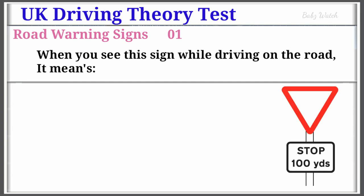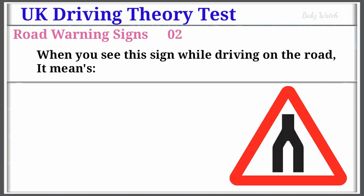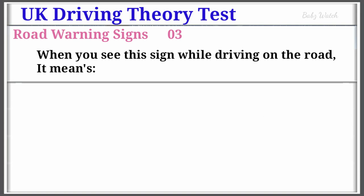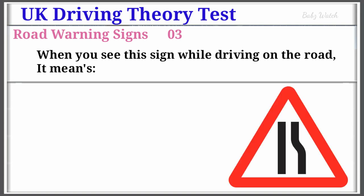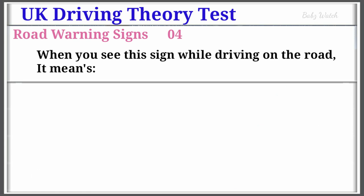UK Driving Theory Test Road Warning Sign Number 1: When you see this sign while driving on the road, it means Distance to Stop Line Ahead. Warning Sign Number 2: When you see this sign while driving on the road, it means Dual Carriageway Ends. Warning Sign Number 3: When you see this sign while driving on the road, it means Road Narrows on Right (left if symbol reversed).